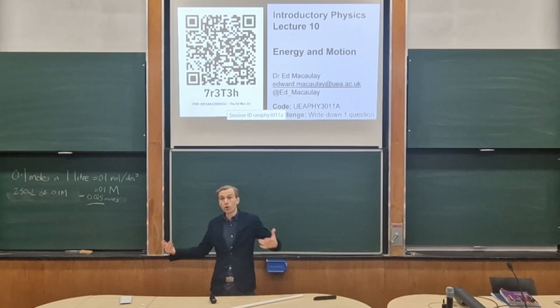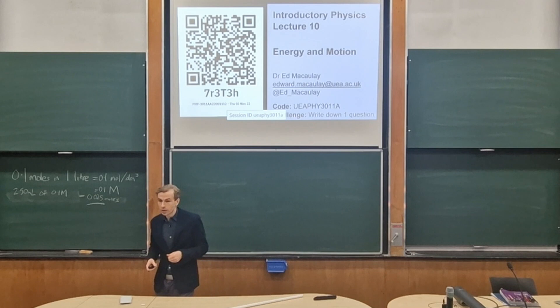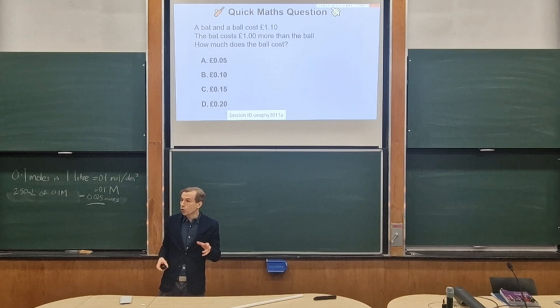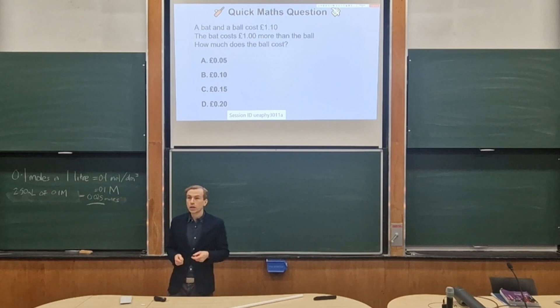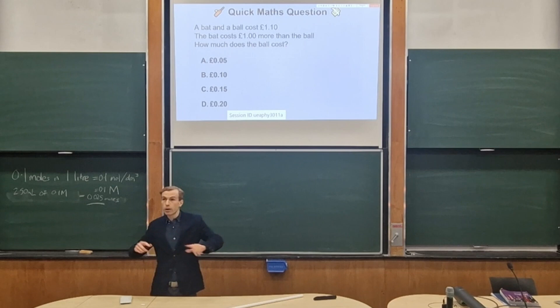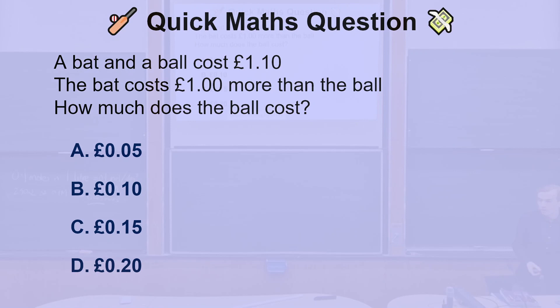Let's start with a quick warm-up maths question — I think given the average temperature in the lecture theatre it's quite appropriate. So we've gone to a store and bought a couple of things: a bat and a ball that costs £1.10 together, and the bat costs £1 more than the ball. The question is: how much does the ball cost? If you've seen this before, maybe help out the people around you.